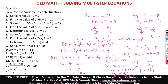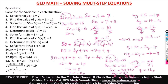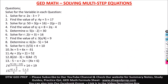Number 6: 2(r plus 3) equals 16. Distribute: 2 times r is 2r, and 2 times positive 3 is positive 6, equal to 16. Take positive 6 to the other side — it becomes negative 6. So 2r equals 16 minus 6, which is 10. Divide both sides by 2, and r equals 10 divided by 2, which is 5.